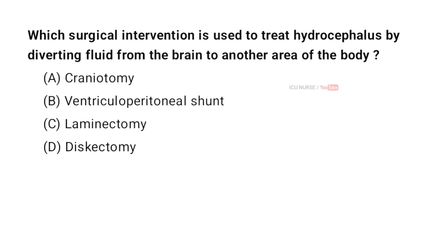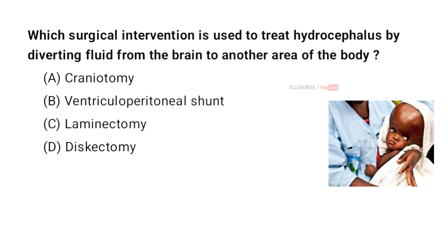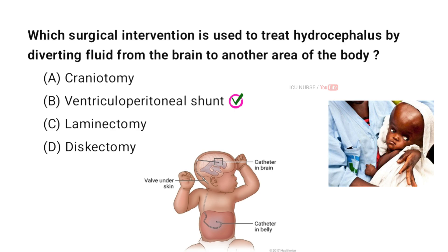Which surgical intervention is used to treat hydrocephalus by diverting fluid from the brain to another area of the body? A. Craniotomy, B. Ventriculoperitoneal shunt, C. Laminectomy, D. Discectomy. And the correct answer is B. Ventriculoperitoneal shunt. It diverts excess cerebrospinal fluid from the brain to the abdomen, reducing pressure in the brain, and involves placing a tube and valve system.